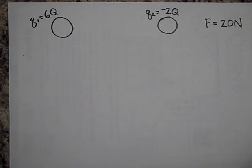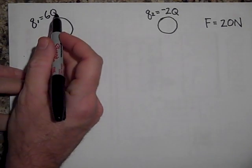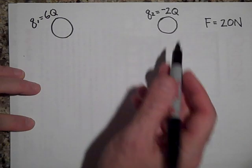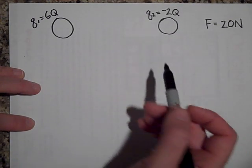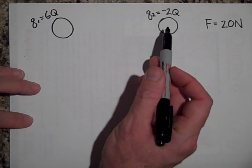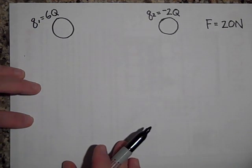So Q is a certain amount of Coulombs. But this is 6Q and this is negative 2Q. And there's 20 Newtons of force between them. And I guess that would be an attractive force since that's negative and that's positive.